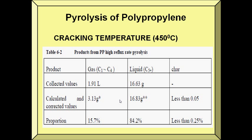The pyrolysis of polypropylene has the same cracking temperature as polyethylene, which is 450 degrees Celsius. Here is the product yield for polypropylene: for collected values, the gas yield is 1.91 liters and the liquid is 16.63 grams.